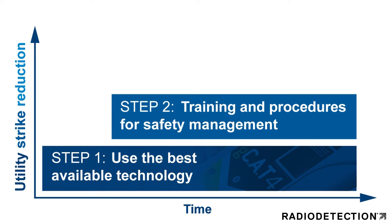Step 2: make sure that all operators have the correct training and safety management skills to locate and mark buried utilities. Radio Detection offers comprehensive cable and pipe locator training courses.